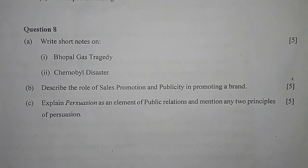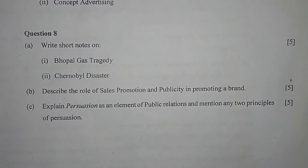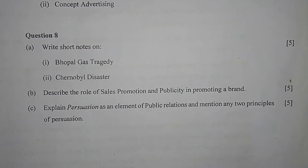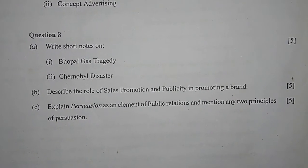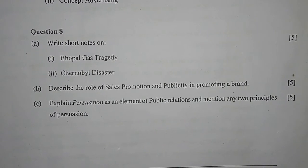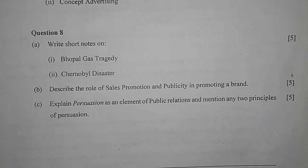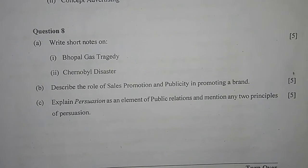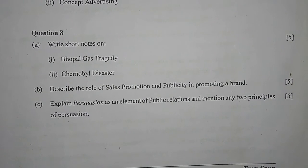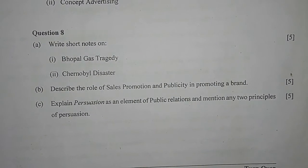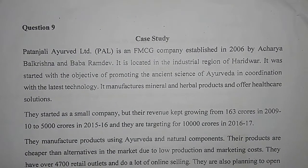Number C: explain persuasion as an element of public relations and mention any two principles of persuasion. Persuasion means to convince a person to do something. It is important for product selling and service, as it moves a person or group to take action. The two principles of persuasion are: number one, reciprocation — a suggestion is more likely to be accepted if it matches the desire of the person, and that requires proper reciprocation. Number two, conclusion — stating a conclusion properly rather than leaving people to draw their own conclusion is very important.